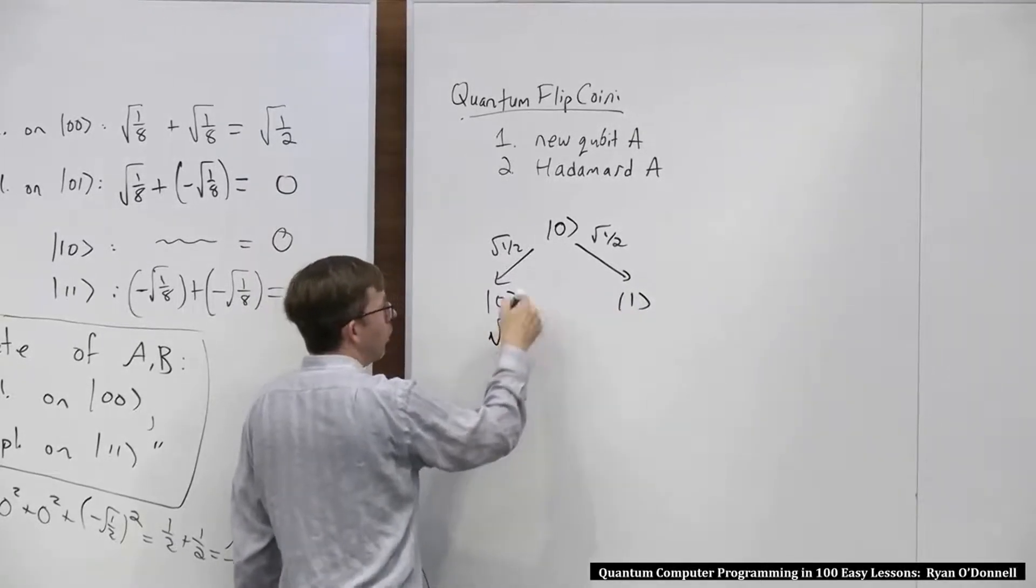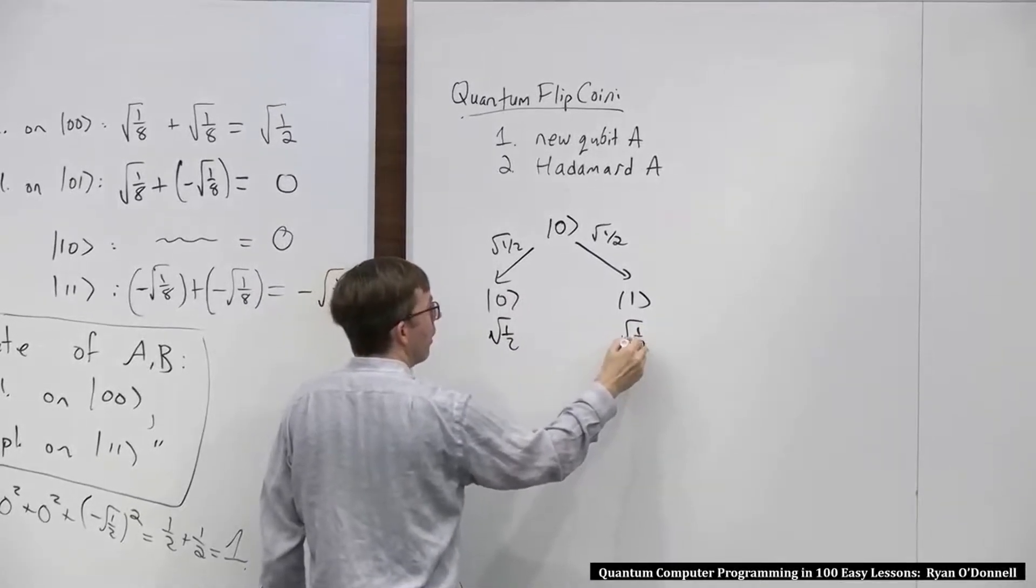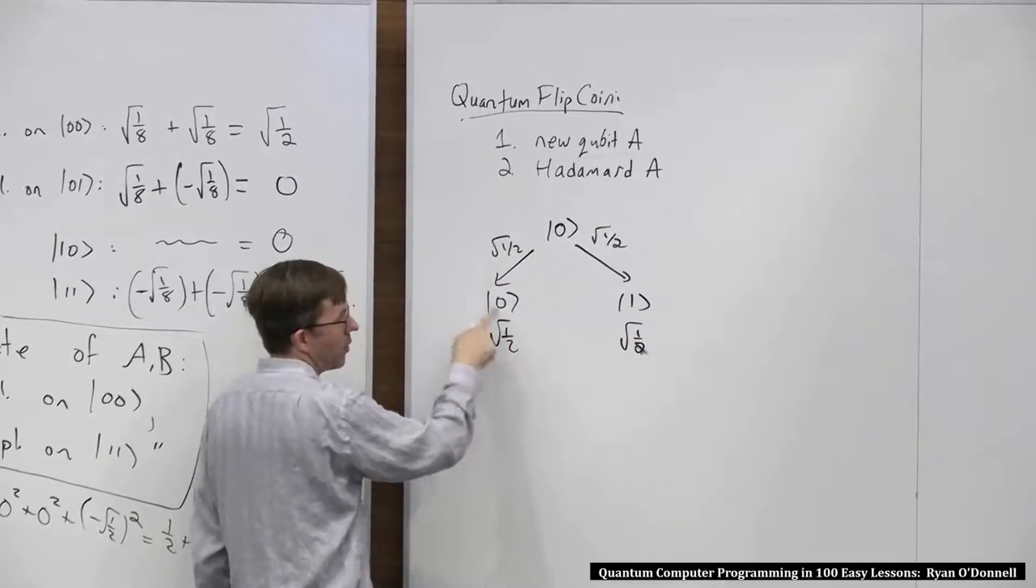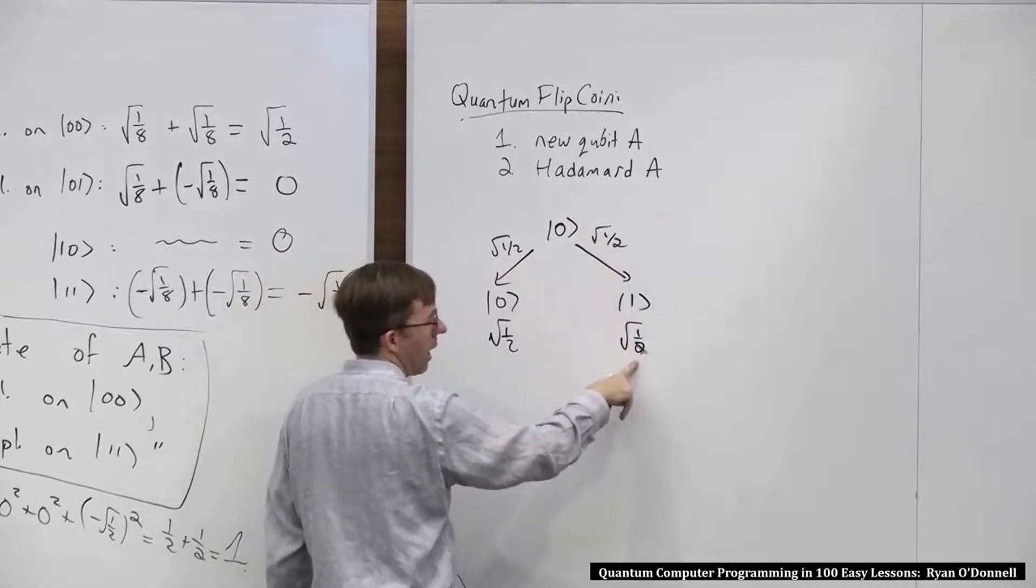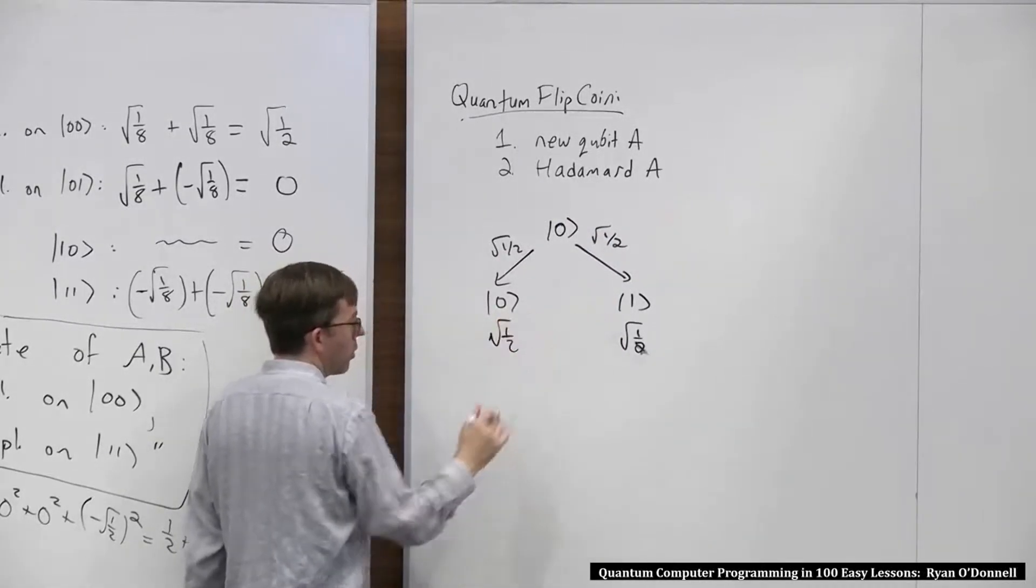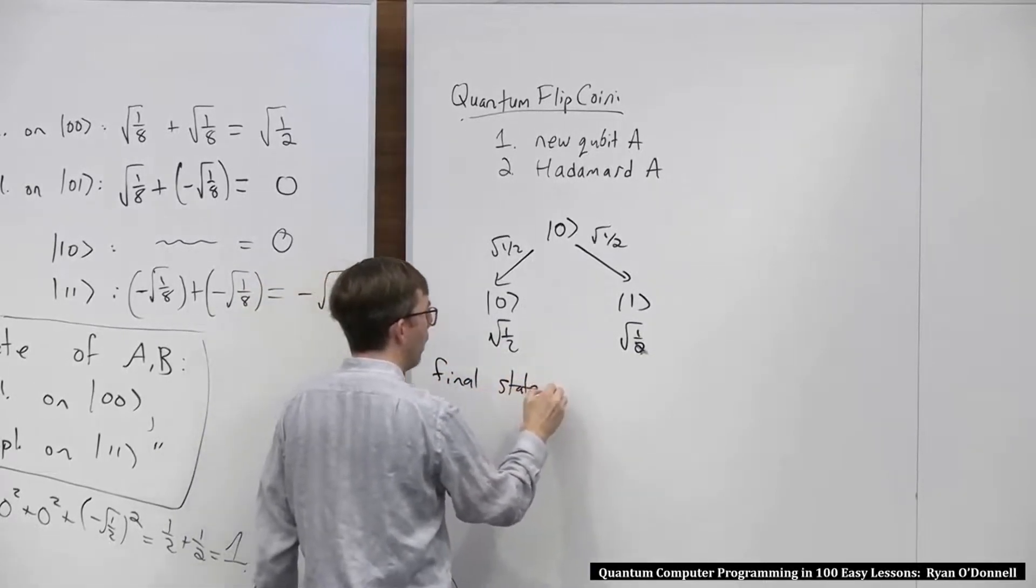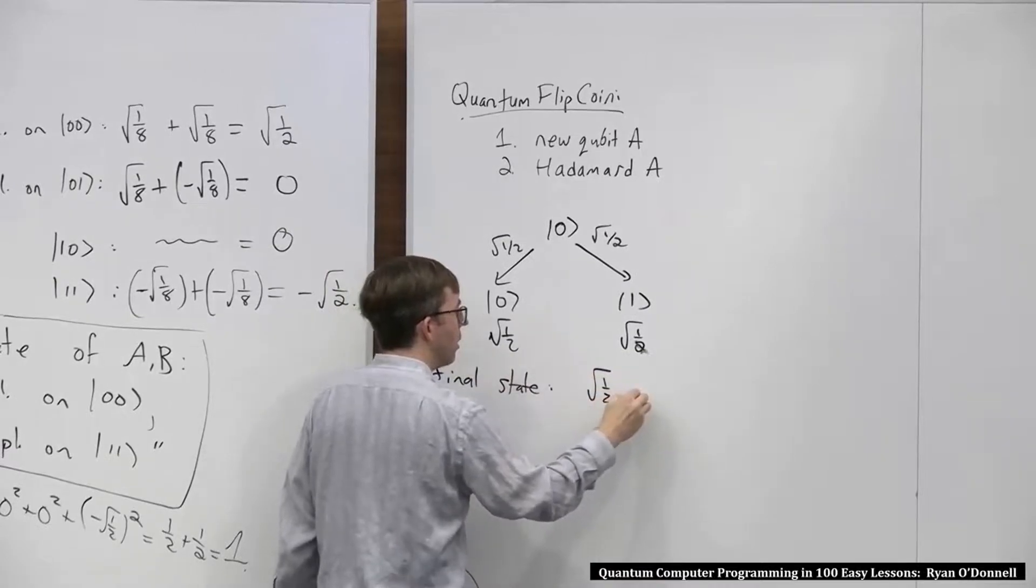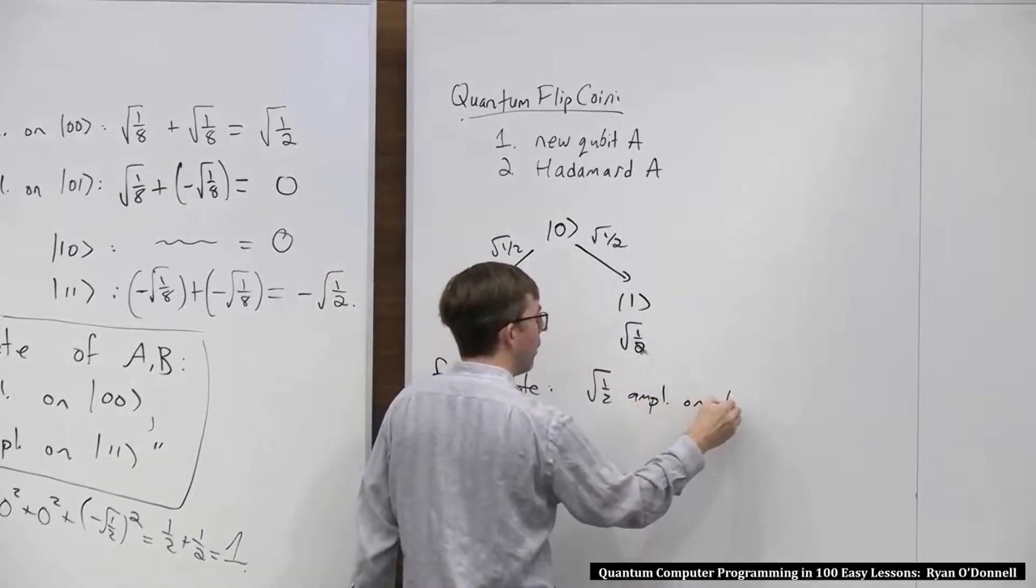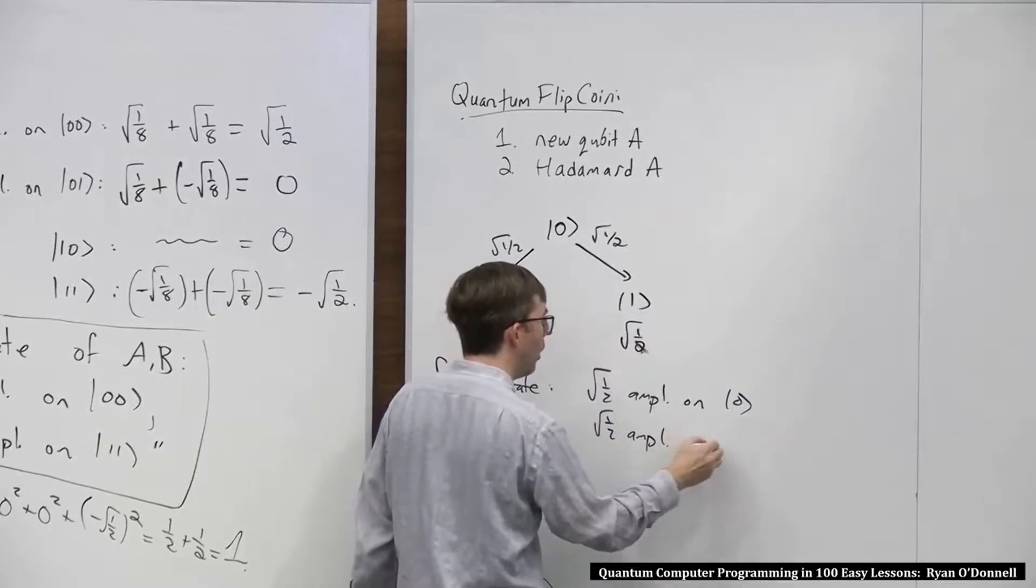We write the final amplitudes at the bottom. This is multiplied everything along the path, there's only one thing. There's no collating to do, because each outcome only occurs once. Final state is root 1 half amplitude on 0, root 1 half amplitude on 1.